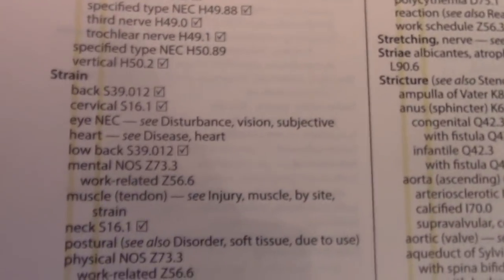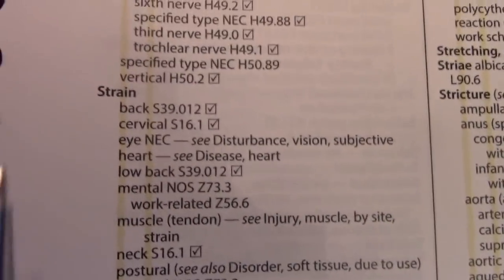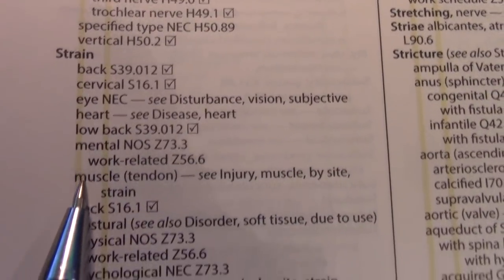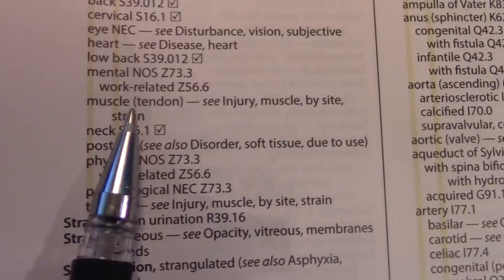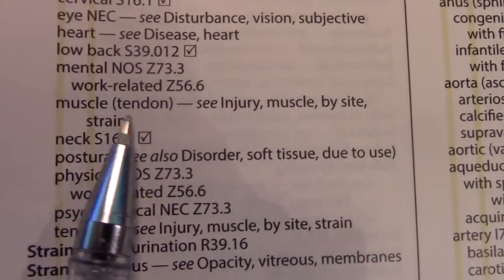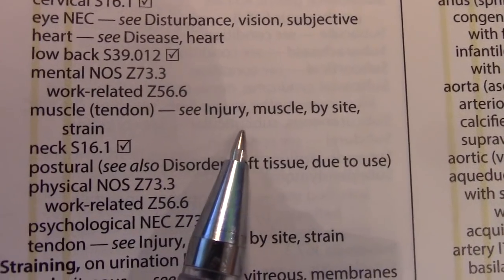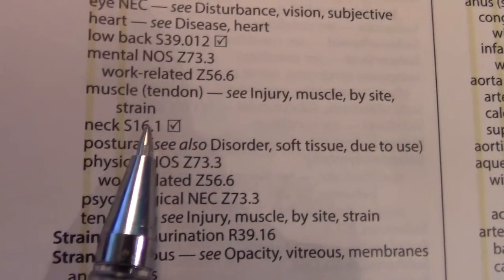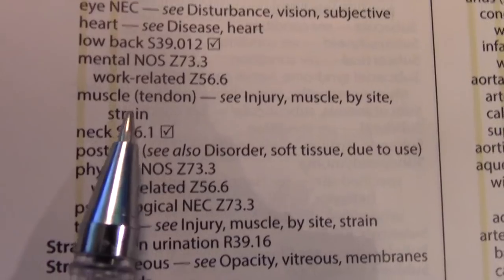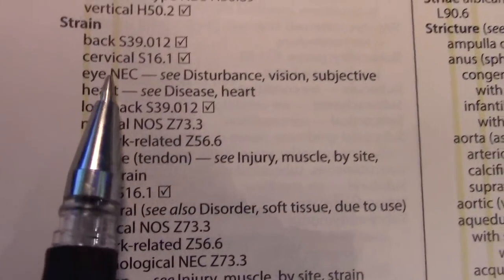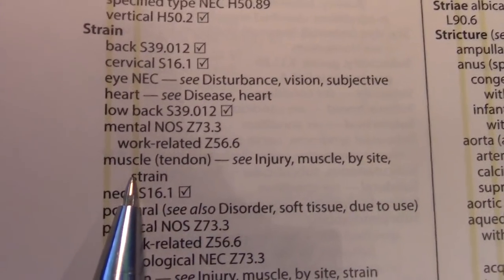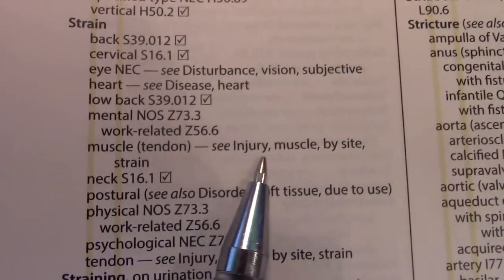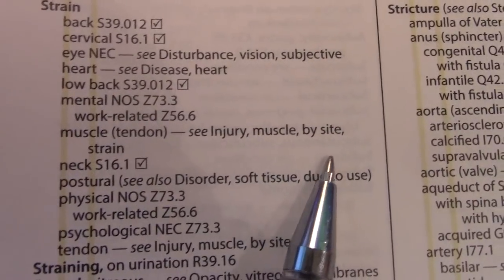So the biggest thing I could show you here is look at the direction under the main term strain. Say, for example, it's a strain of the hip. Go to main term strain, go down to muscle, because a strain is actually a muscle, right? And it says: see injury, muscle, by site. And when you get there, go to strain. Hip was not one of our subterms under strain, so we'd go to muscle — and it says even if it's a tendon, go see injury, muscle, by site, strain.